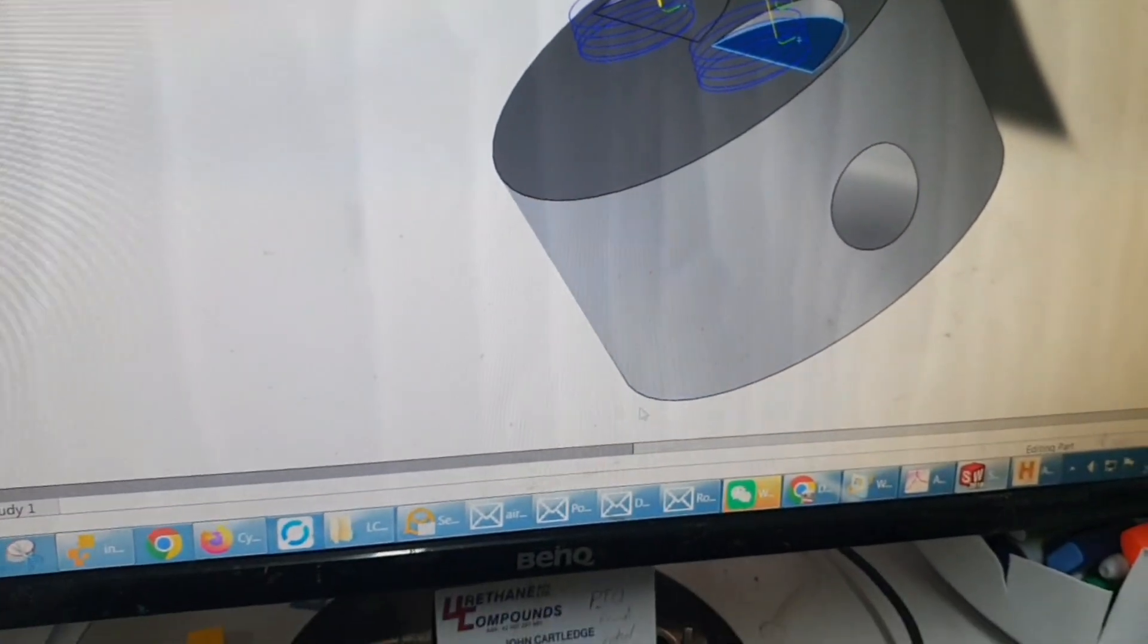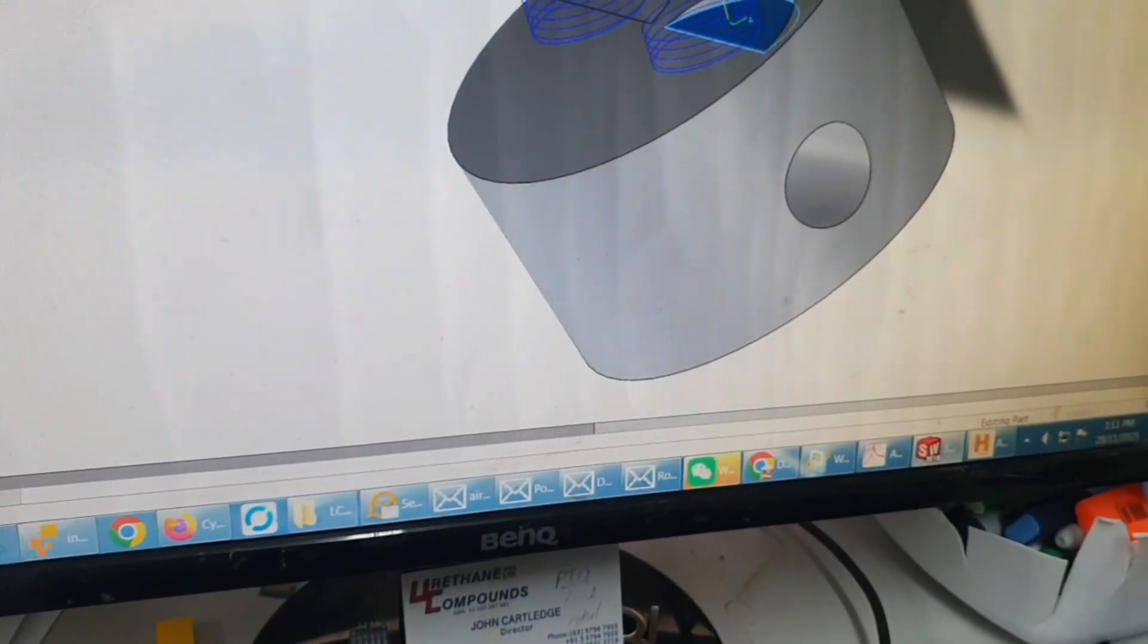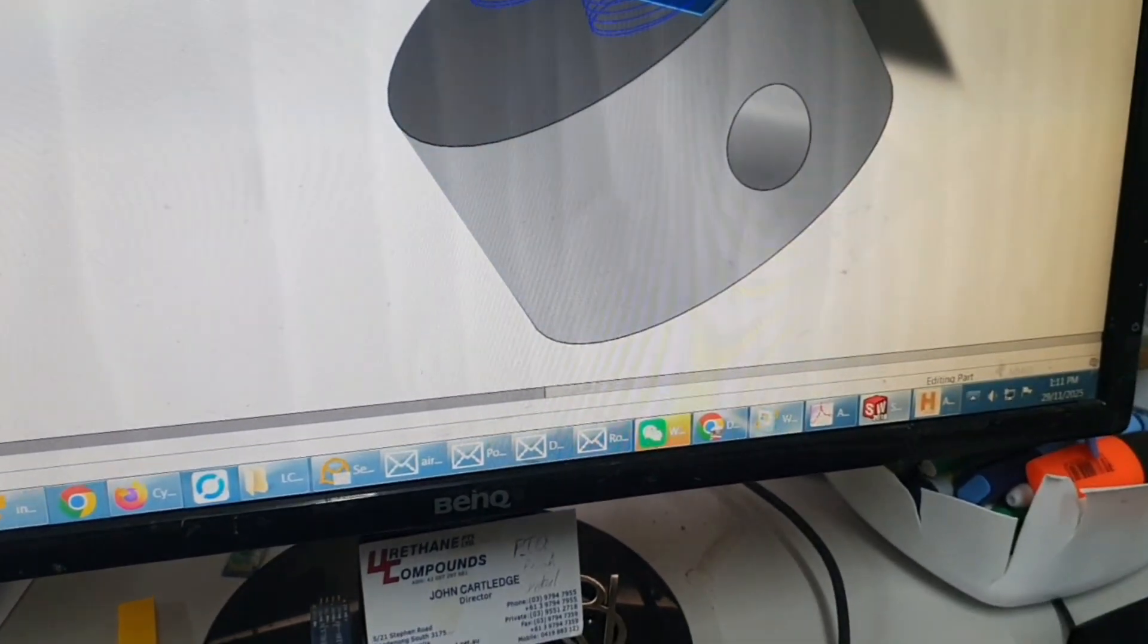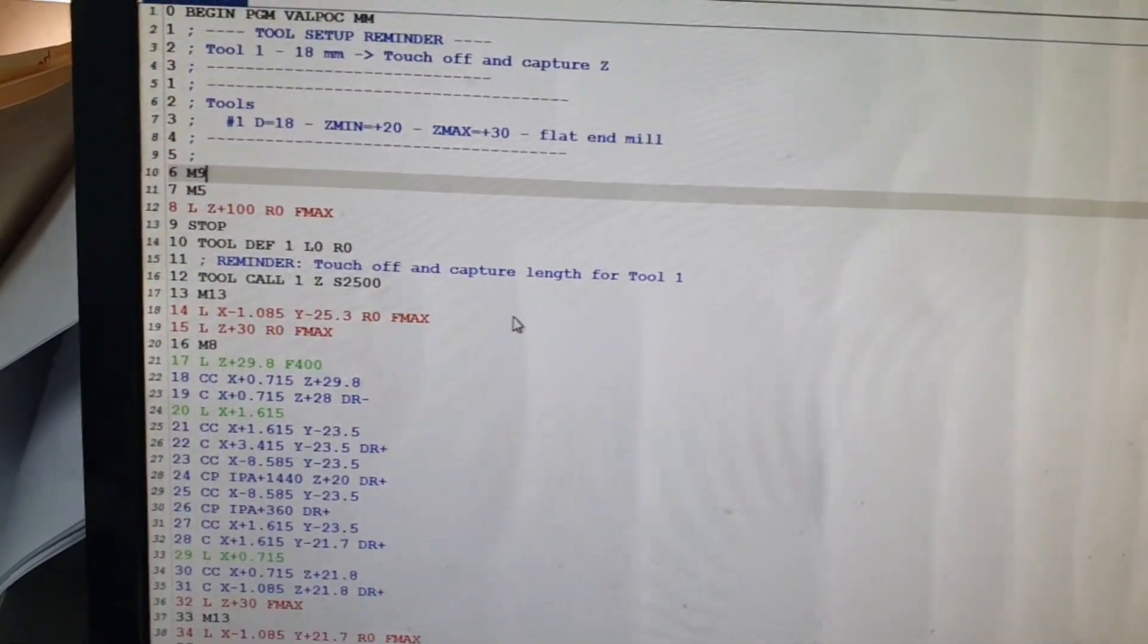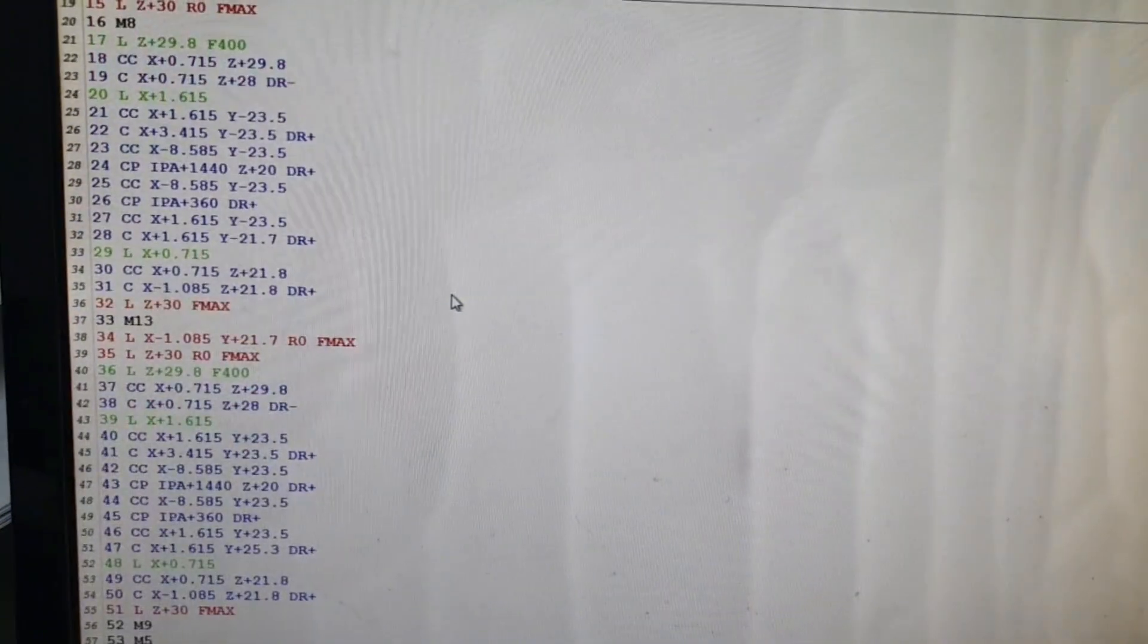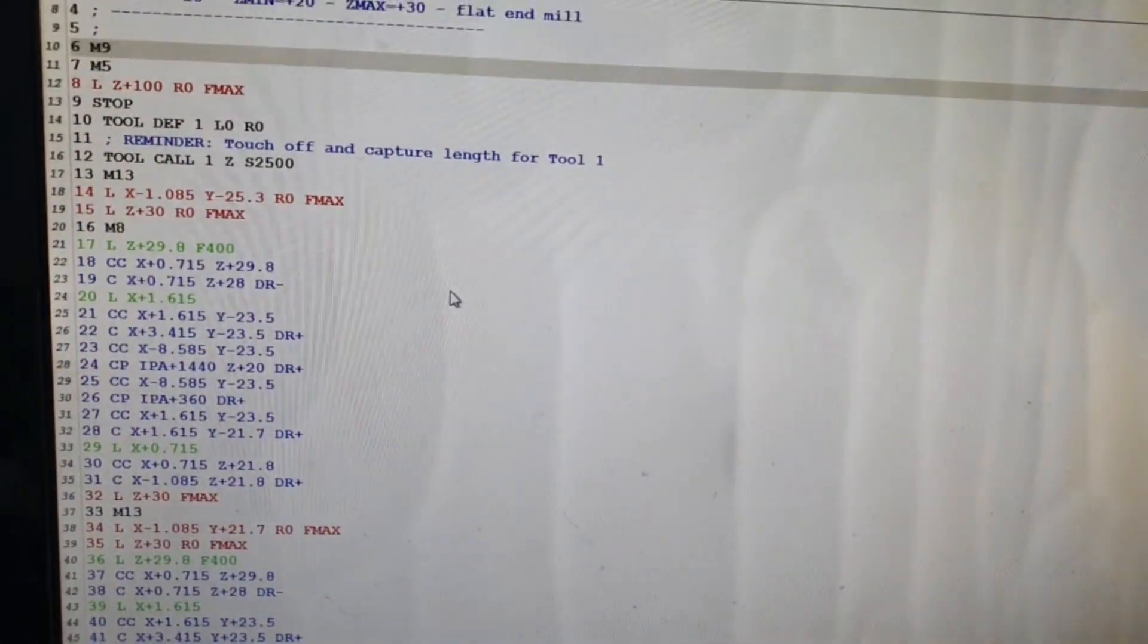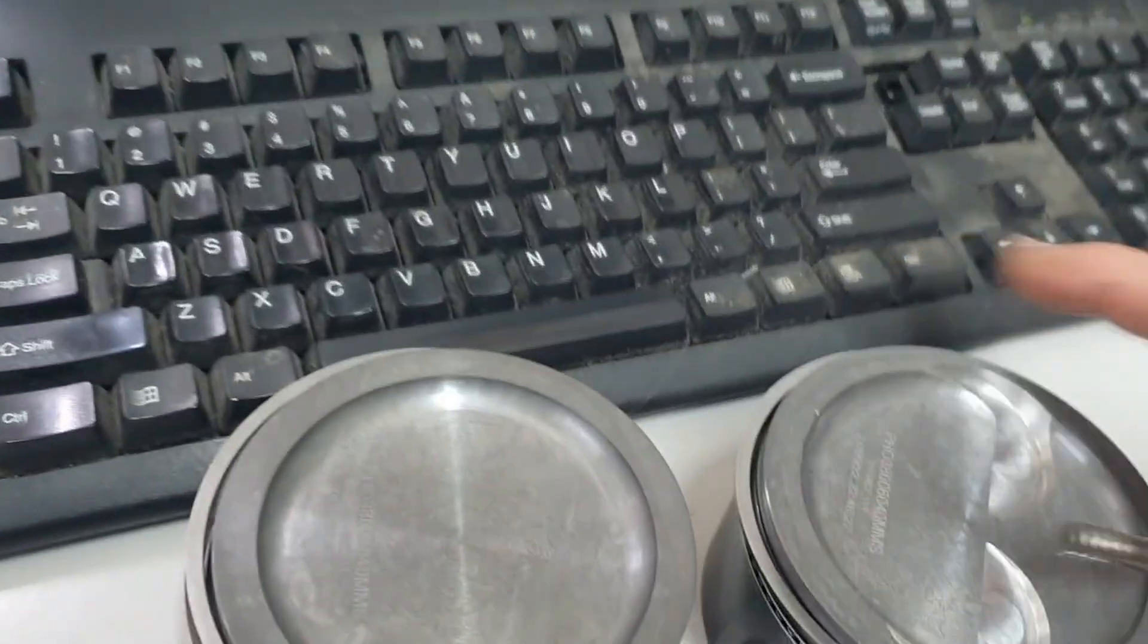And then when you go over to the code, you can see the code here, and there's the code. So that's all the G code that gets pumped into the CNC machine. Set the tools up, jig the part accurately, which we're going to have a look in a minute, and then run your program. And then as a result, we go from that, and we go to that. That is beautiful.